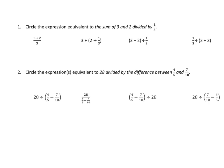The first part says: circle the expression equivalent to the sum of 3 and 2 divided by 1 third. What I like to do is take the words and interpret them, then compare with the choices. Since we're adding, we need parentheses around the sum first: (3 + 2) ÷ 1/3.